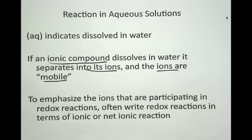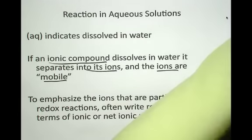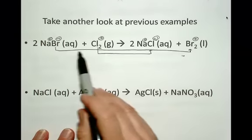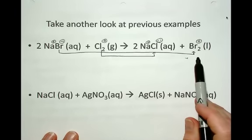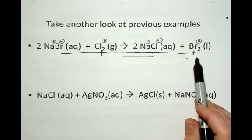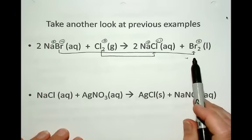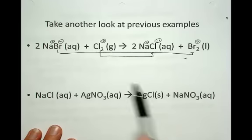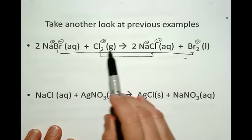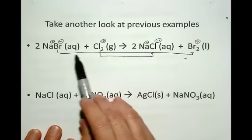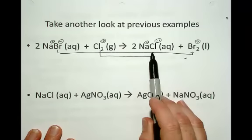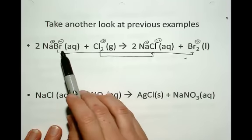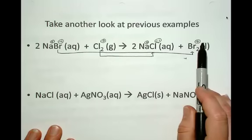Let's take another look at a previous example. I'll review how we would represent this example in terms of the ions—the ionic reaction or net ionic reaction. We've already recognized what's undergoing reduction and oxidation, and we've noted all the oxidation numbers. Now take a closer look.